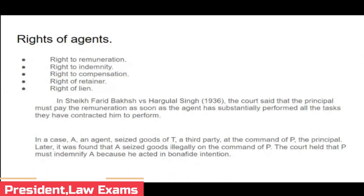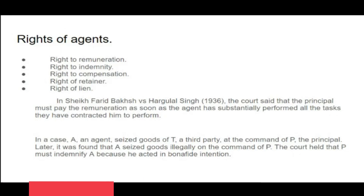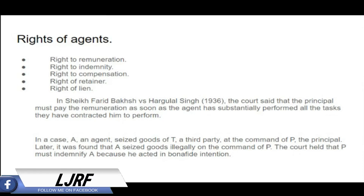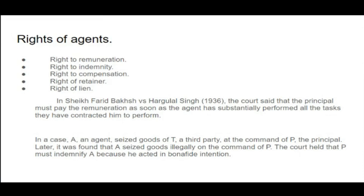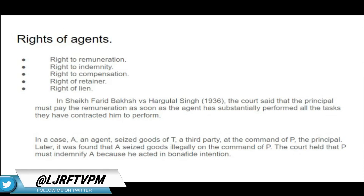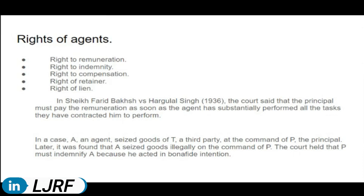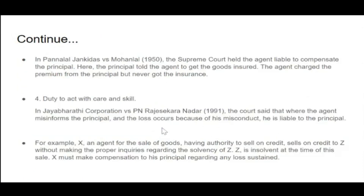Sections 217, 219, and 221 all deal with retainer and lien — they are similar concepts. Before, Section 217 was talking about the right to retain money. Section 221 widens the scope: goods, papers, and other properties — whether movable or immovable — that he has received from the principal or for the principal. He can retain all of those.